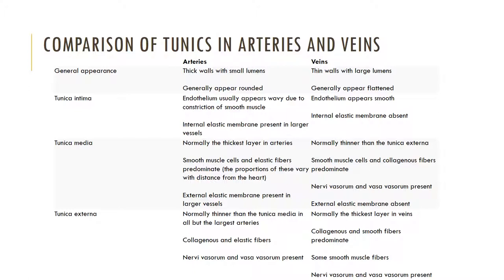Arteries also have a thick tunica media which is dominated by smooth muscle and elastic fibers, while veins have a thin tunica media composed of smooth muscle and collagen fibers. Arteries possess an external elastic membrane within their tunica media, while veins lack an external elastic membrane. Arteries possess a tunica externa made of collagen and elastic fibers, while the tunica externa of veins possesses collagen and smooth muscle.